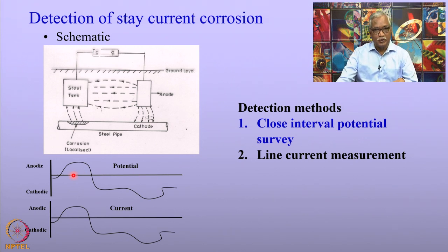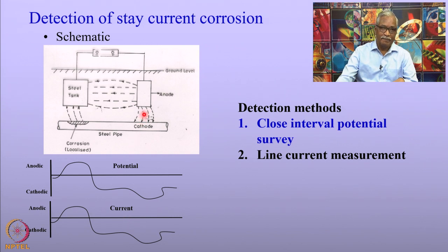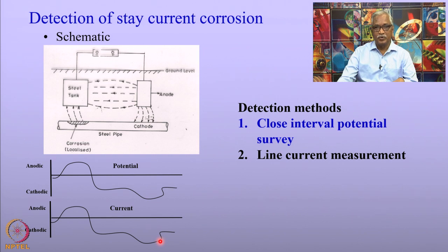It is also possible to measure the line current. In the schematic, the line current between two segments of the pipeline shows more cathodic current at the location where the stray current is collected by the pipeline, and then the current turns anodic where the current leaves the structure. So it is possible to detect stray current corrosion using two simple techniques — close interval potential survey and line current measurements — with the close interval potential survey being the simpler of the two.